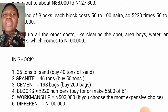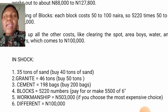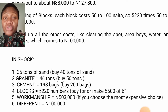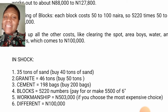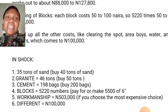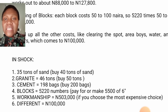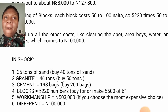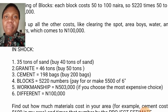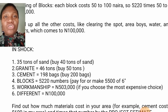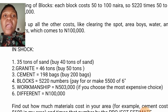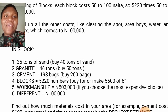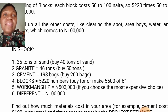To summarize the quantities with buffer: we calculated 35 tons of sand — buy 40 tons. Granite is 46 tons — buy 60 tons. Cement is 198 bags — go for 200 bags. Blocks we got 5,220 — buy 5,500 six-inch blocks. For workmanship, depending on whether they charge per block or a flat fee, my estimate came out to approximately 503,000 naira. Keep about 100,000 aside for contingencies.